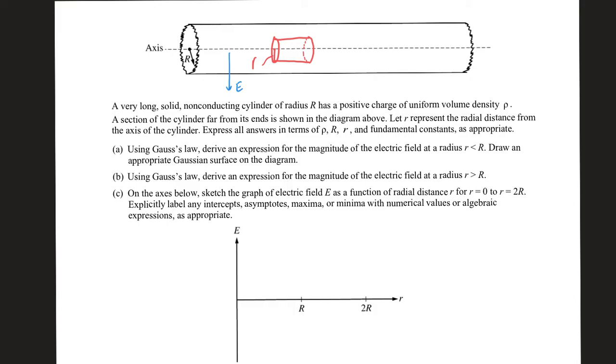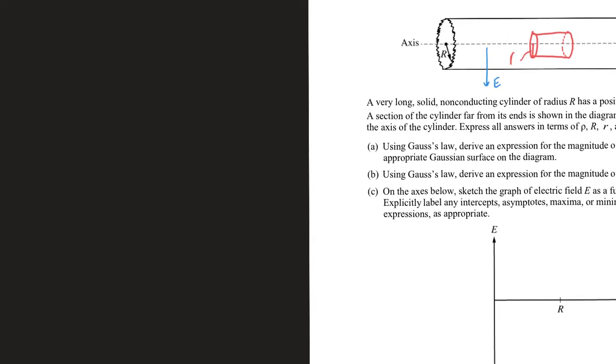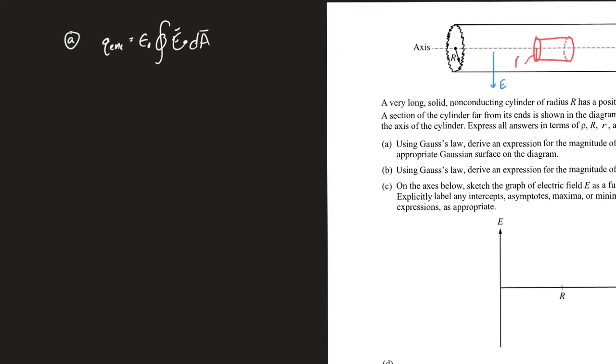There's one point for a correctly drawn cylinder inside the cylinder. Next, they gave five points for part A. For using Gauss's law, they expect you to say Q enclosed equals epsilon naught times E dot dA. For any correct statement of Gauss's law, and then for a correct expression for the Q enclosed. Now, calculating Q enclosed, you need to recognize this has a uniform volume density of rho.